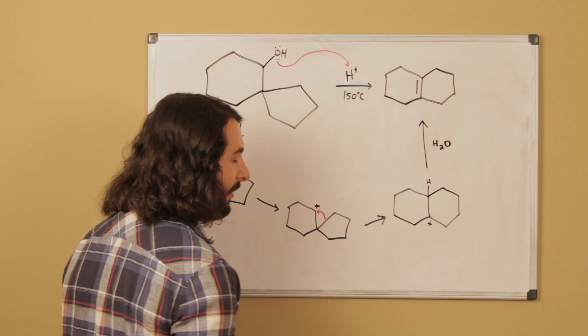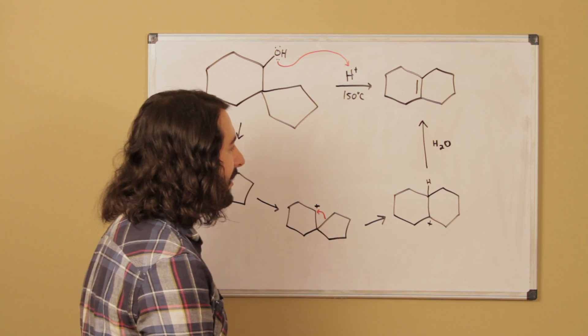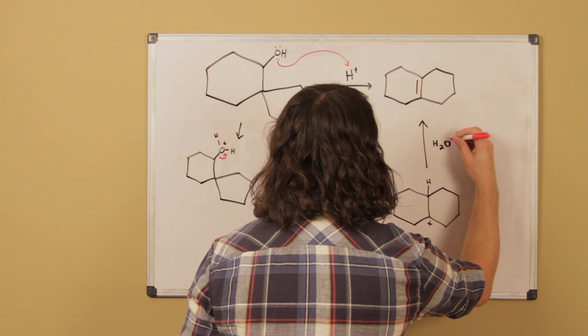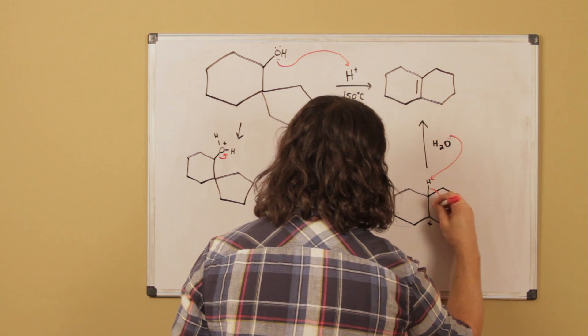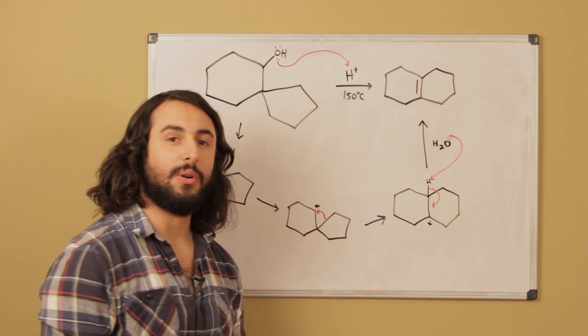And so now from this secondary carbocation we have this tertiary carbocation, and we are in aqueous acidic solution so we can always eliminate. What's going to happen is this can grab this proton here and form the pi bond there, and there's our product.